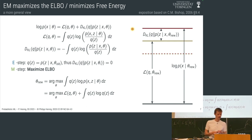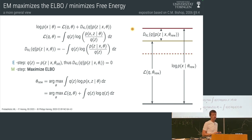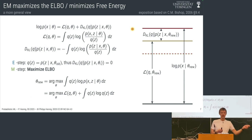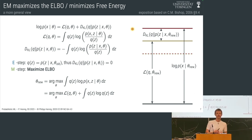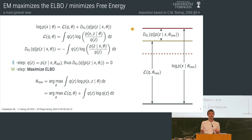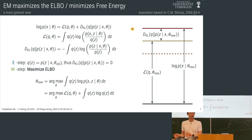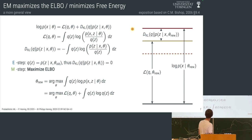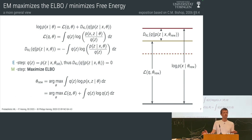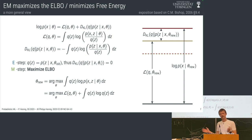Then we can repeat — we close the gap again and go again. So why not use gradient descent on theta? Actually, you can. In the second half of this lecture I'll show you why you might not want to. But you can compute a gradient of this ELBO with respect to theta — in fact, that's what people often do in the class of algorithms called variational inference.